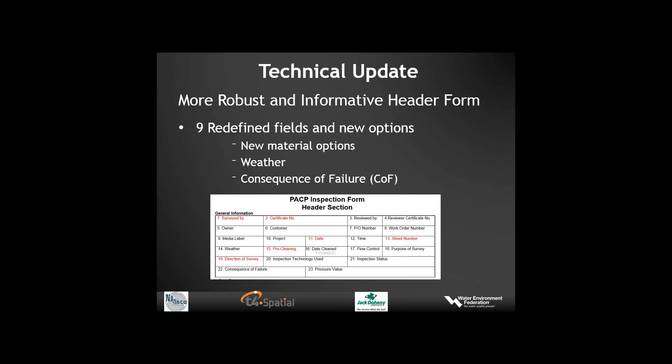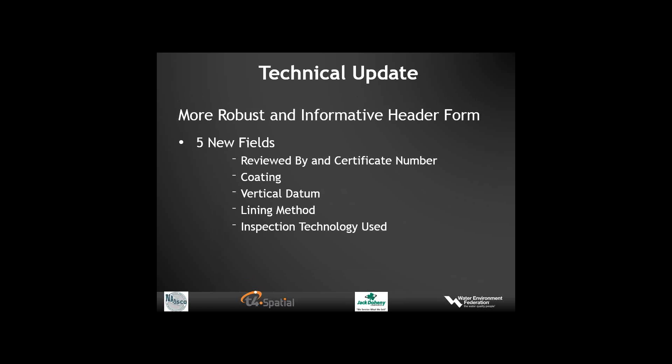With respect to the header form, there are nine redefined fields and new options including new material options, updated and clarified weather conditions, and a new consequence of failure data field. All databases will be updated by all different vendors that sell PACP-certified software. There are also five new fields—for example, reviewed by and certificate number—where someone outside the field crew reviews the data coding and is also PACP certified. New fields include coatings, vertical datum, lining methods, and the inspection technology used, whether CCTV, panorama, or different new technologies.